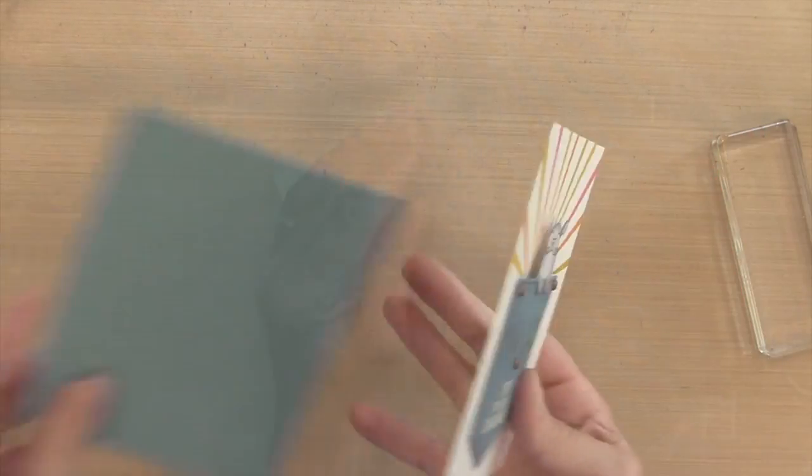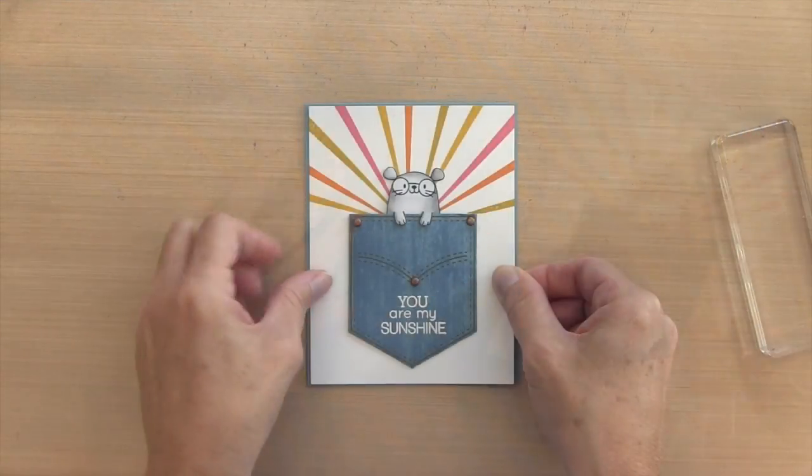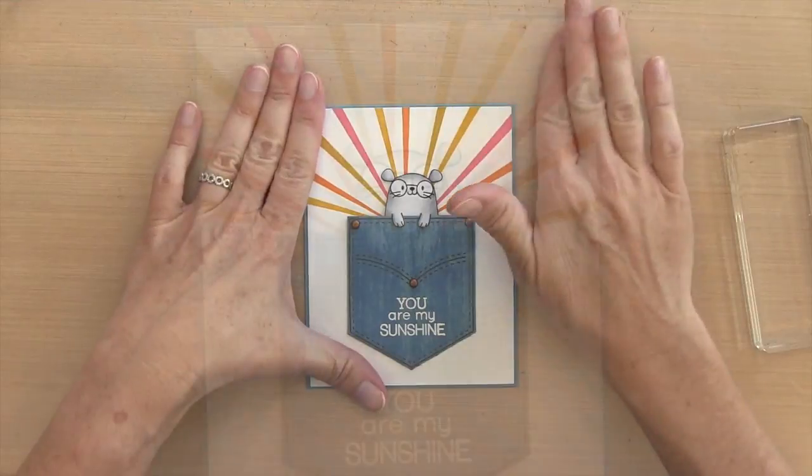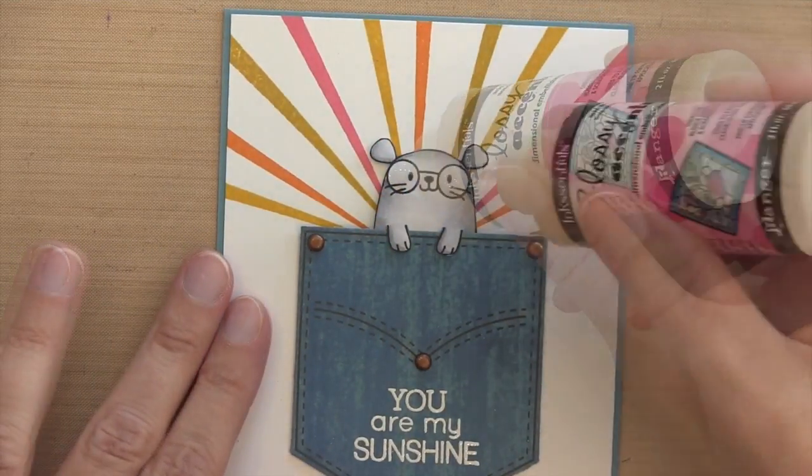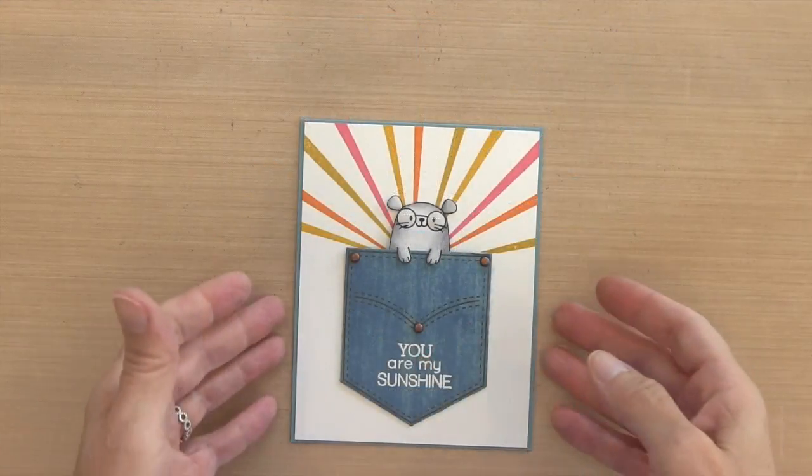I'll put some ATG tape runner on the back and I'm adhering it to a marina mist. It's the same color I used for the pocket base. So you can see I have about a sixteenth of an inch mat on all sides. And then finally one last detail is to put some glossy accents on his glasses.